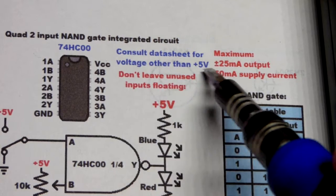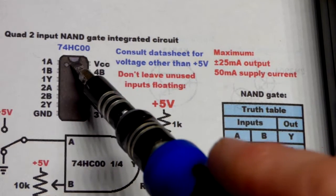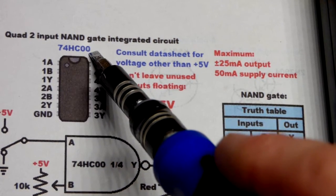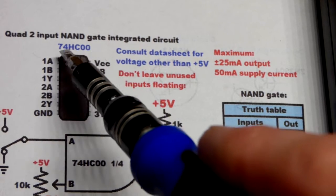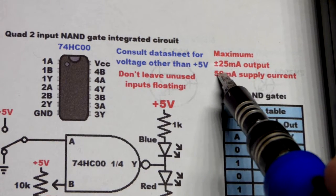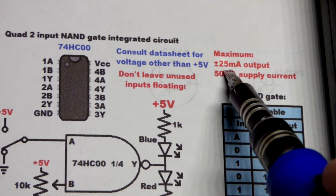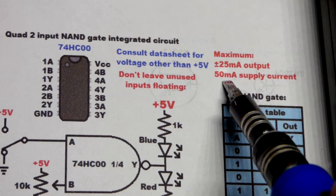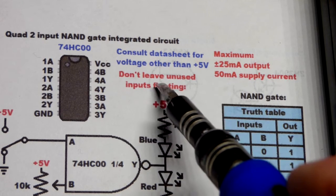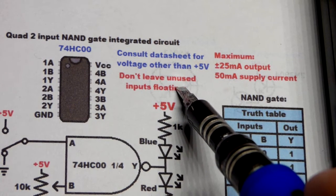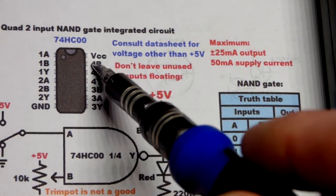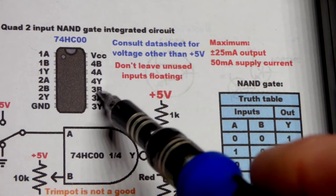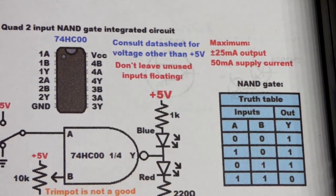Always consult the data sheet for any integrated circuit you're using. I'm using the 74HC00, a high-speed CMOS version. Generally we're good with 25 milliamps of current from the output, either being sourced or sunk, but there's a total limit of 50 milliamps of current. Don't leave the inputs floating - that causes problems. You can see that I put a jumper to the positive supply for all the inputs that we were not using.